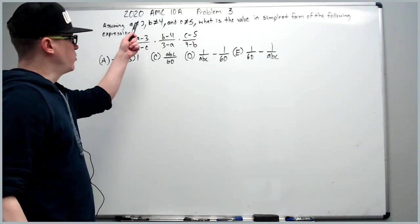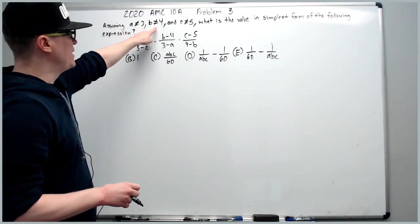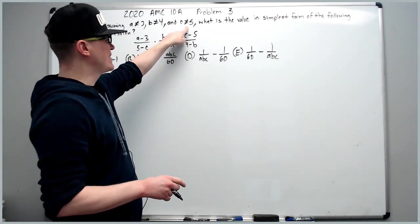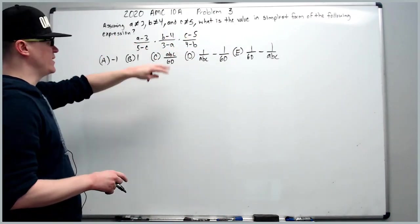And continuing on with the 2020 10A problem three. Assuming A does not equal 3, B does not equal 4, and C does not equal 5, what is the value in the simplest form of the following expression?